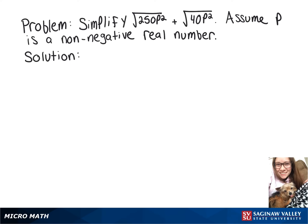We're going to simplify this expression, so let's start by turning our square root of 250p squared into the square root of 25 times 10 times p squared.